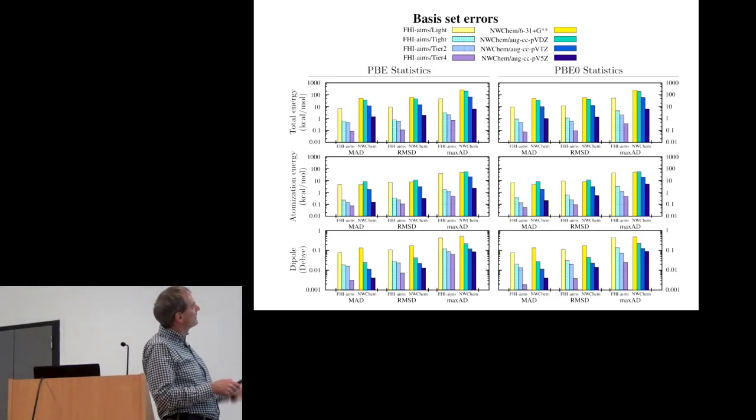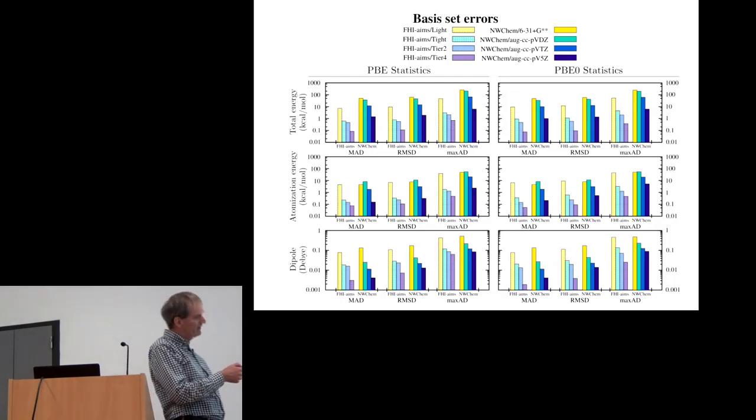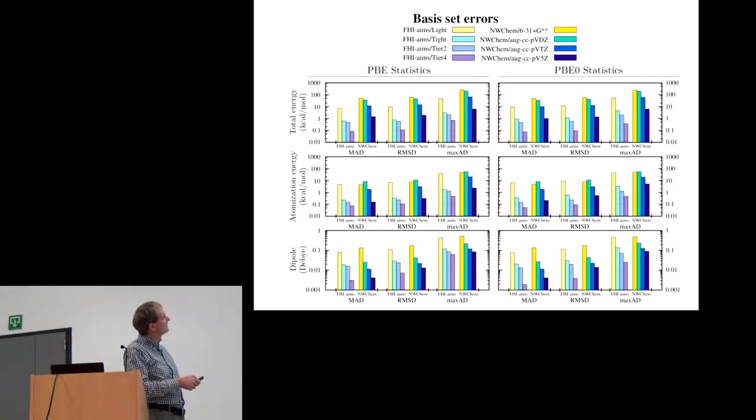That was our first test. We wanted to determine how good are atom-centered basis sets, so we tested both standard Gaussian basis sets and the basis sets from the FHI-aims code: light, tight, tier 2, tier 4, and so on. If we look at the average errors in the atomization energy for the Gaussian basis sets that are very widely used, we have errors that are quite large, close to 10 kcal per mole. Remember our magic accuracy that we would like to achieve, this chemical accuracy, is 1 kcal per mole.